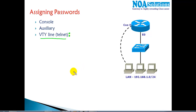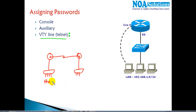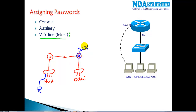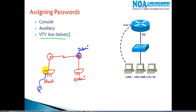On routers we call the Telnet line the VTY line. Let me give an example: I have a network in Hyderabad and a branch office in Dubai. My requirement is to sit at my LAN here and configure the Dubai router remotely. I cannot fly to Dubai every time I need to configure it. No one wants to do that — you need to be able to monitor networks and access devices remotely.